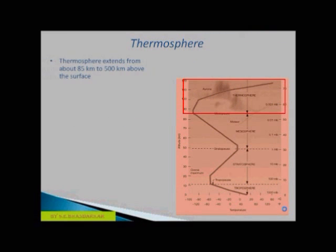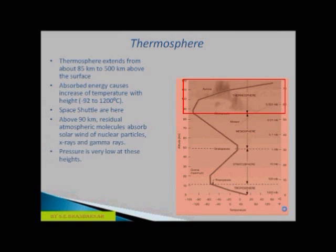Last region of atmosphere is thermosphere. It extends from about 85 kilometers to 500 kilometers above the surface. And there is increase in temperature from minus 92 to 1200 degrees centigrade. Since above 90 kilometers, residual atmospheric molecules absorb X-rays and gamma rays. Space shuttles are here and pressure is very low at these heights.